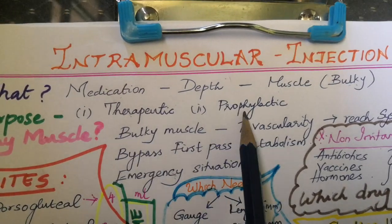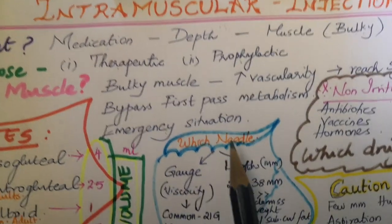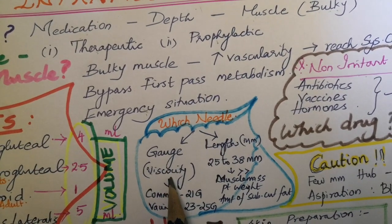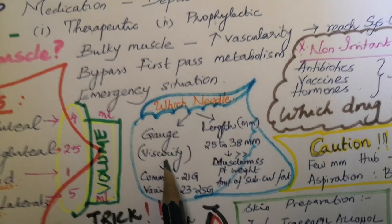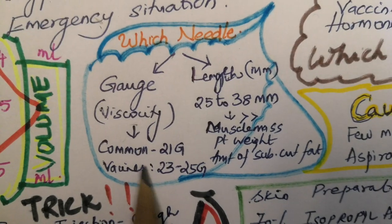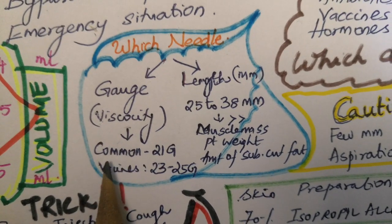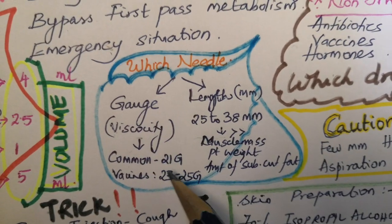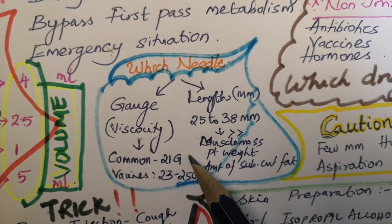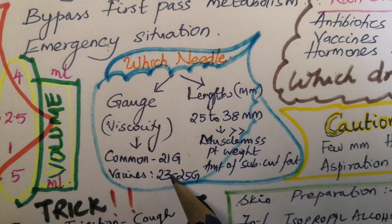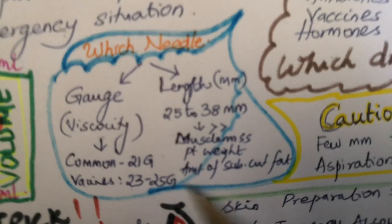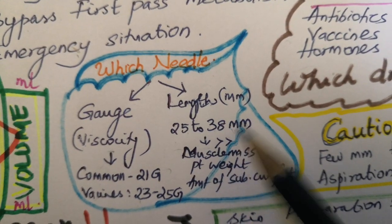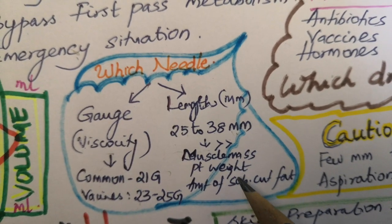The purpose of intramuscular injection is either therapeutic or prophylactic. Needle selection depends on gauge and length. Gauge depends on viscosity — as viscosity increases, gauge increases, so they are inversely proportional. 21 gauge is mostly used; for vaccines, 23 to 25 gauge can be used.